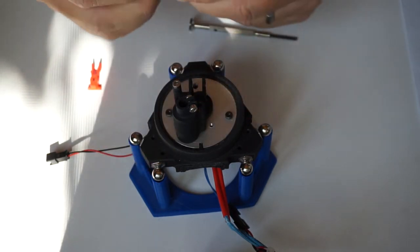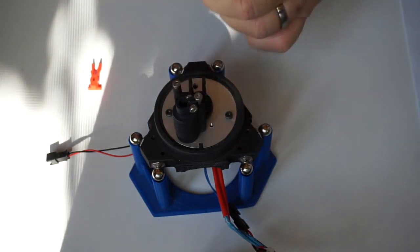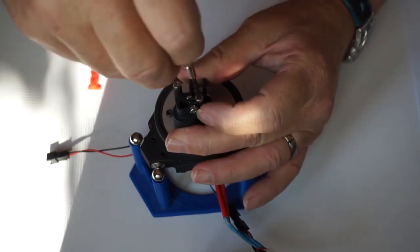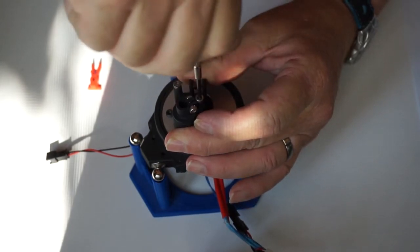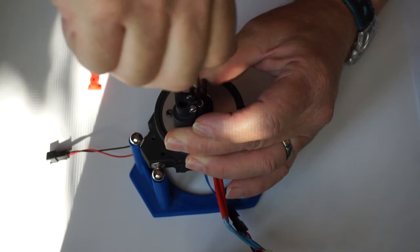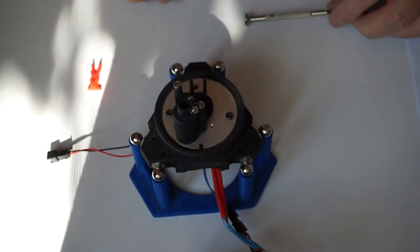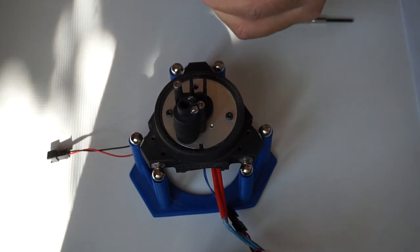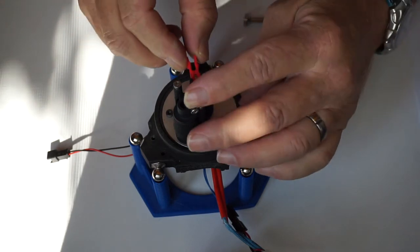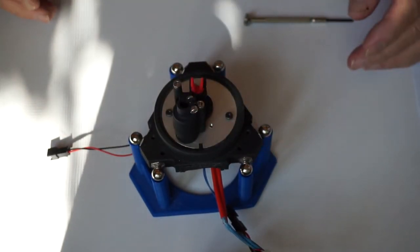Take the other longer screw and insert it nice and tight. Take the breech block, click it in, and done.